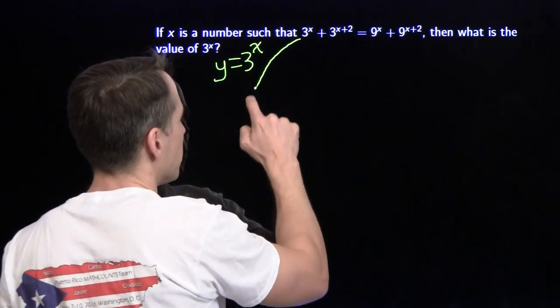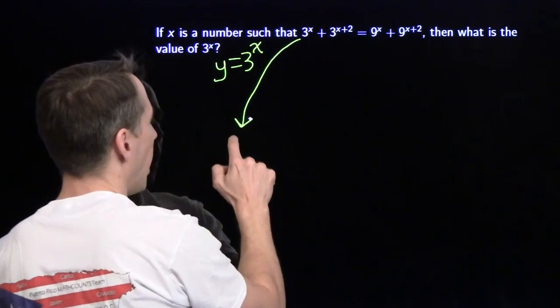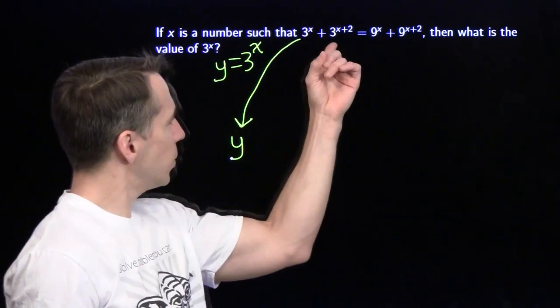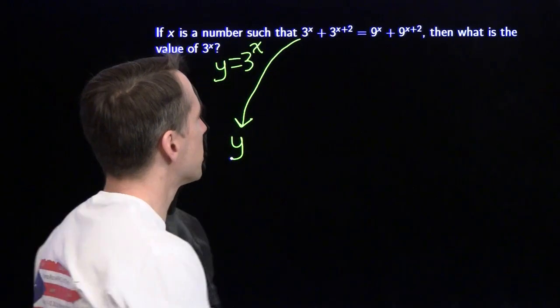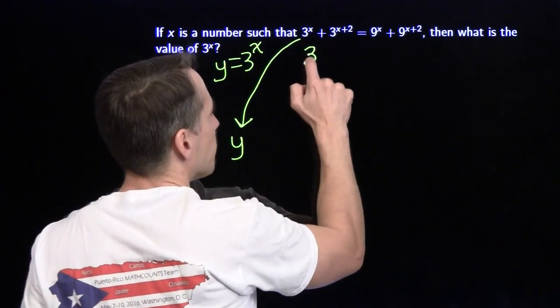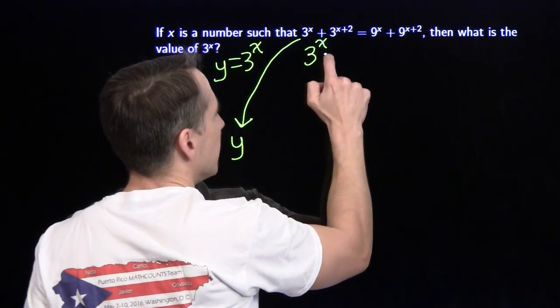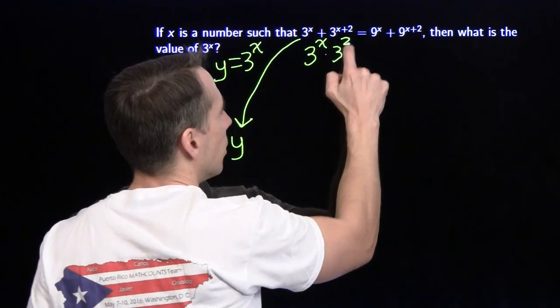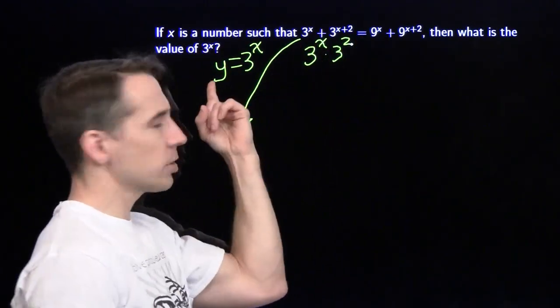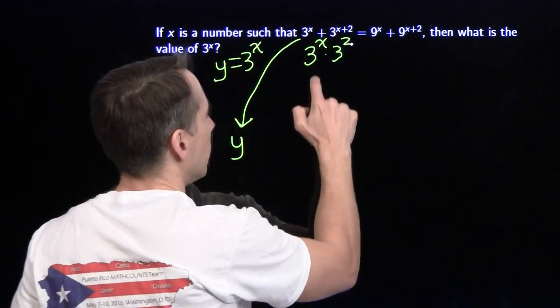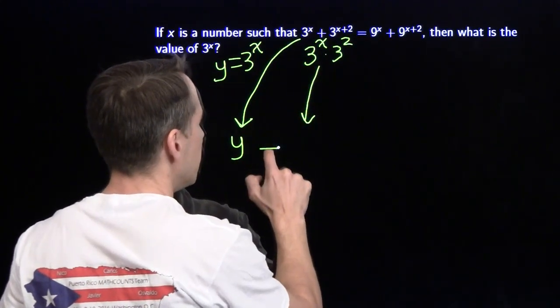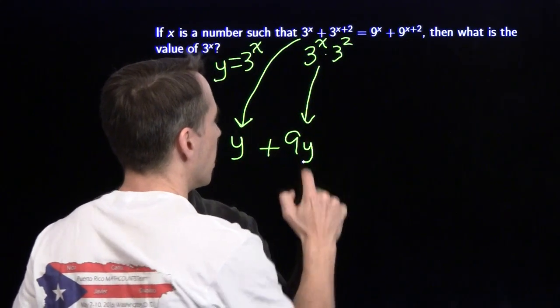So now I need to rewrite this. The first term, that's pretty simple. The first term, that's just y. Now this one here, 3 to the x plus 2. Well, we remember our exponent laws. That's just 3 to the x times 3². Well, 3² is 9. And 3 to the x, we said that's y. So that tells me that this term is just 9 times y.